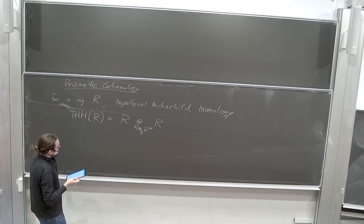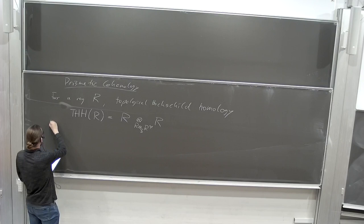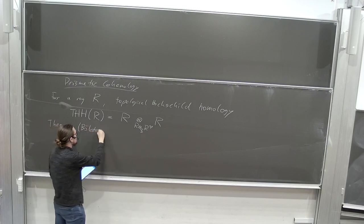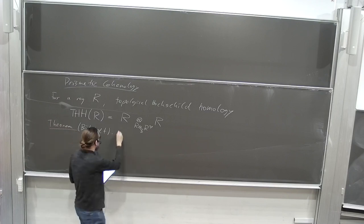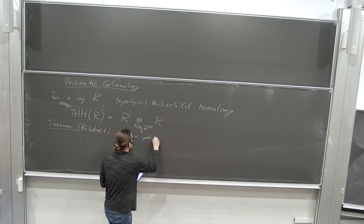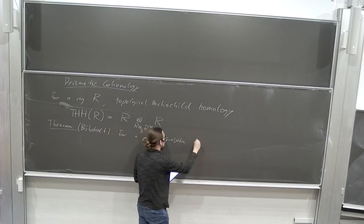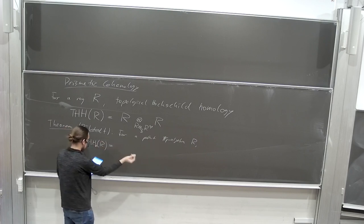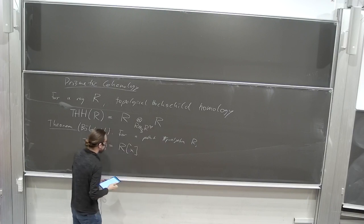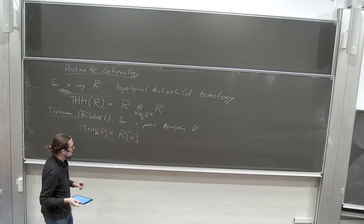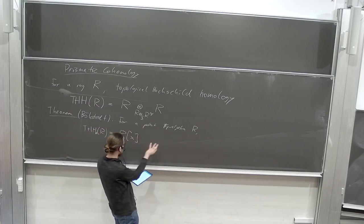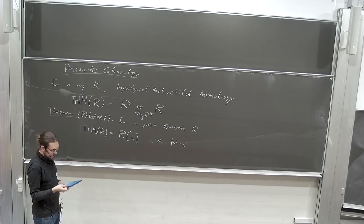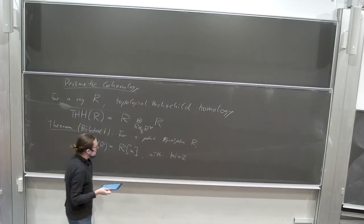This behaves very nicely. Here's the first and most important computation, which goes back to Bökstedt: for a perfect F_p algebra R, if you take the homotopy groups of THH, then this is periodic — it's a copy of R in every even non-negative degree. As a graded ring, the homotopy groups are polynomial on a generator in degree 2. So that's Hochschild homology.